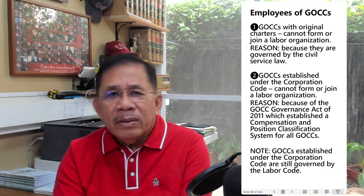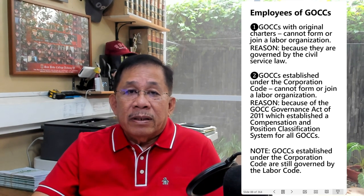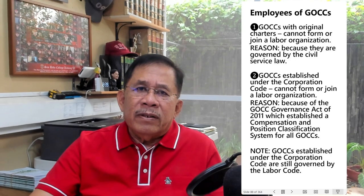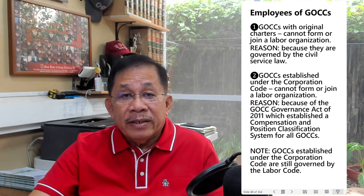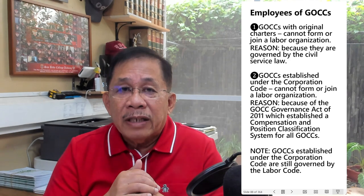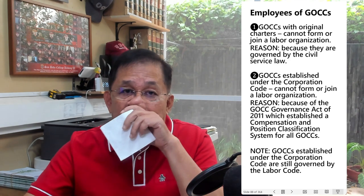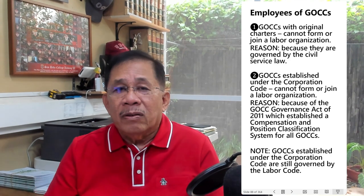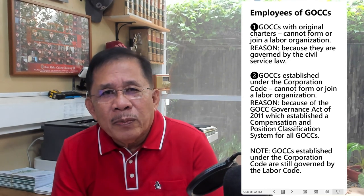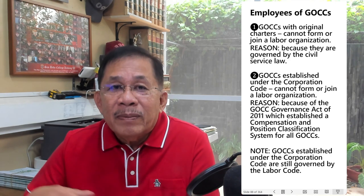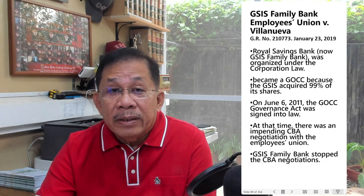There are two kinds of government-owned or controlled corporations: those with original charters and those organized under the corporation law. Employees of GOCCs with original charters cannot form or join a labor organization because they are governed by the civil service law. On the other hand, GOCCs established under the corporation law cannot form a labor organization because of the GOCC Governance Act of 2011, which established a compensation and position classification system for all GOCCs whether chartered or non-chartered. This is illustrated by the case of GSIS Family Bank.